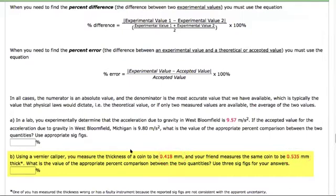are we comparing what physics says versus what we measured, or are we comparing two measurements? I think it's percent error because it says one of you has measured the thickness wrong, or has a faulty instrument.